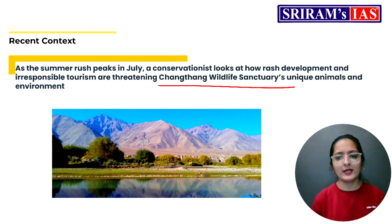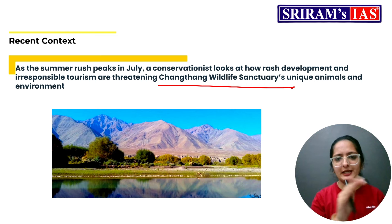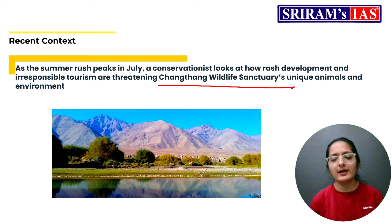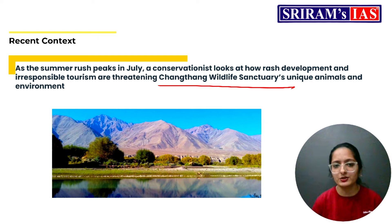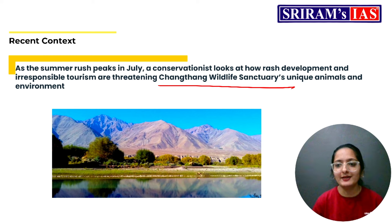The next article is Changtang Wildlife Sanctuary. Why is it in the news? In July, as tourist activity peaks during the summer rush, conservationists have raised concerns about the impact of uncontrolled development and irresponsible tourism practices on this wildlife sanctuary. It is home to unique animals and a fragile environment that are increasingly under threat. Conservationists are highlighting the dangers posed by these activities to the sanctuary's biodiversity, and urging more sustainable practices to protect this ecosystem.